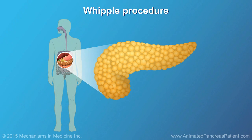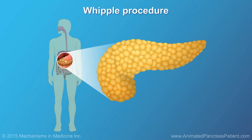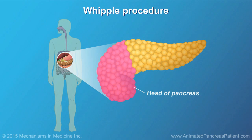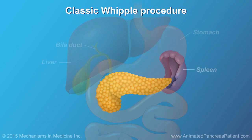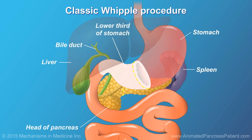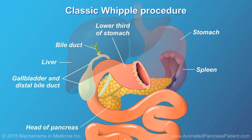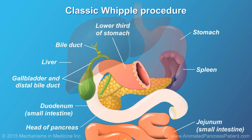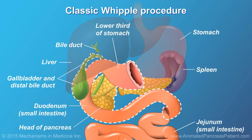Tumors, cysts, and obstructions in the head of the pancreas are removed using a surgery known as the Whipple procedure. In a classic Whipple procedure, the head of the pancreas, part of the stomach, part of the bile duct, and some of the small intestine are removed.